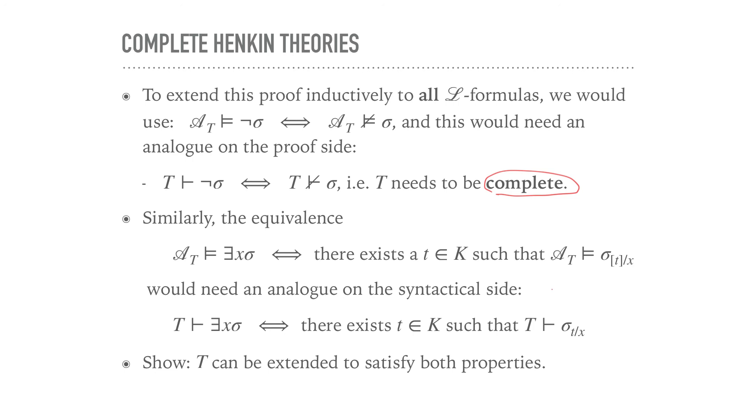Theories with this property have a special name. They are called Henkin theories. So this is the so-called Henkin property. And this will play a crucial role, as you may imagine, in the proof of the completeness theorem. And what we need to show now, and that's the work ahead of us, is that T can be extended to satisfy both of these properties, without changing the provability properties or consistency properties of T in any way. So that's the project ahead of us. Can we extend T to be complete and also to have the Henkin property?